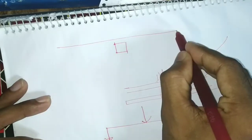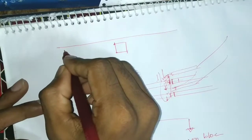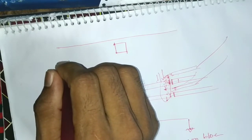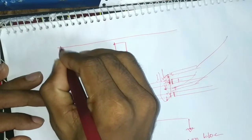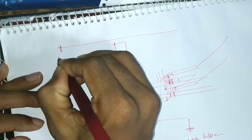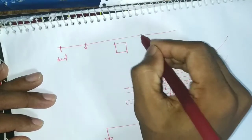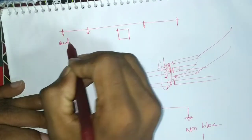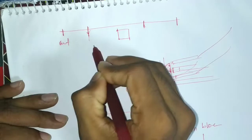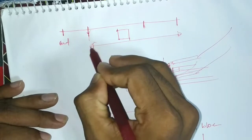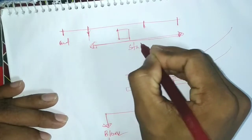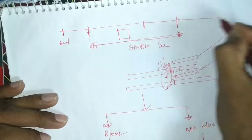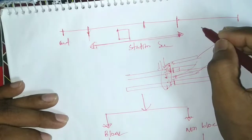We have seen the signals: the outer signal, the home signal, and the starter signal. The starter signal is more for the station section. The home signal controls what happens at the station section.